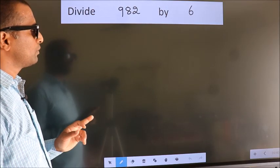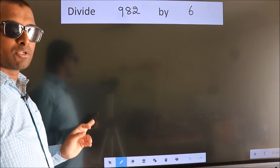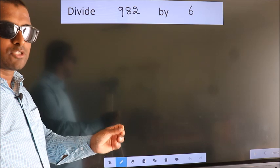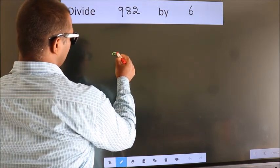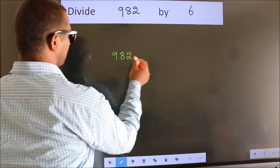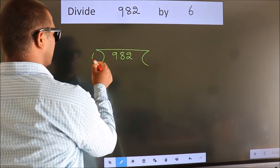Divide 982 by 6. To do this division, we should frame it in this way. 982 here, 6 here.